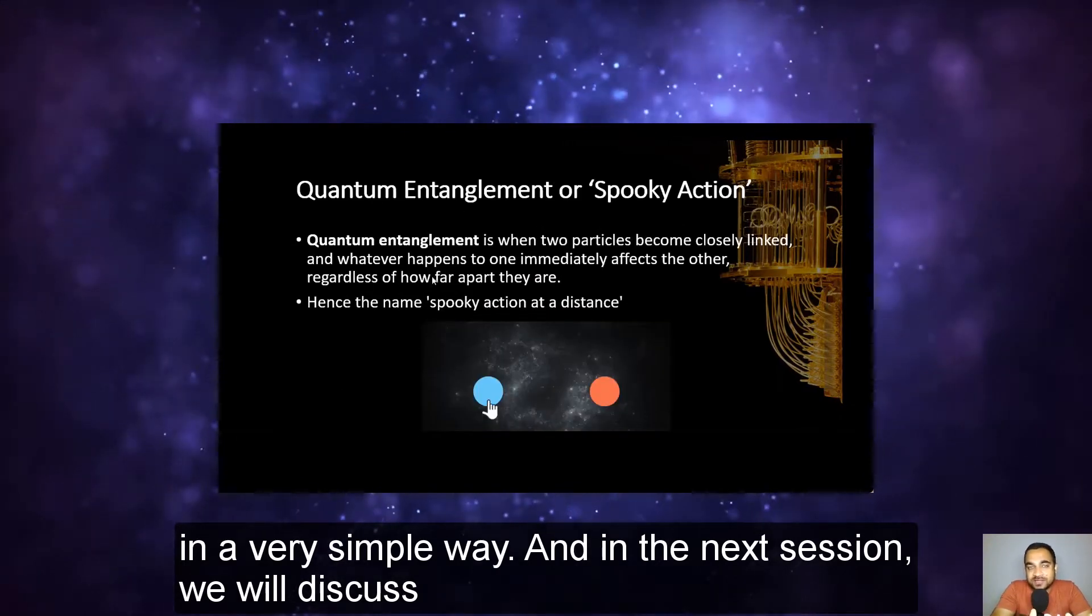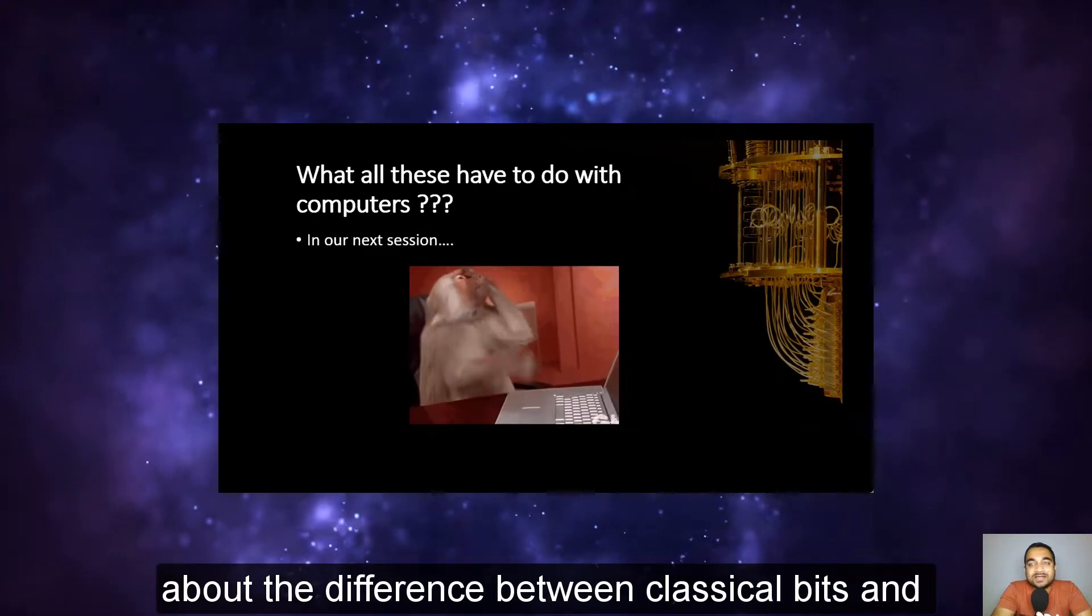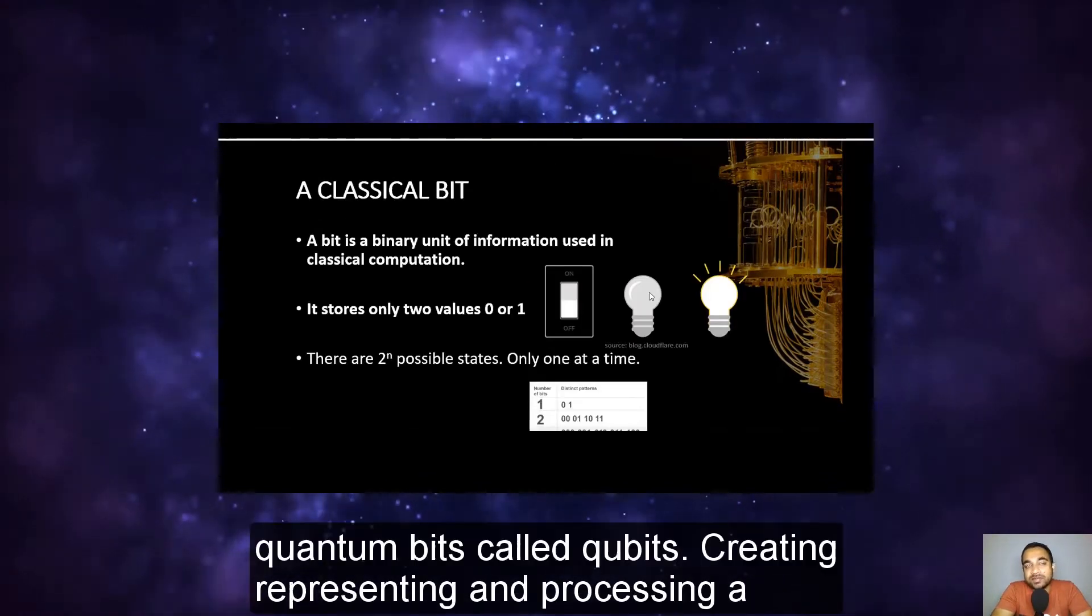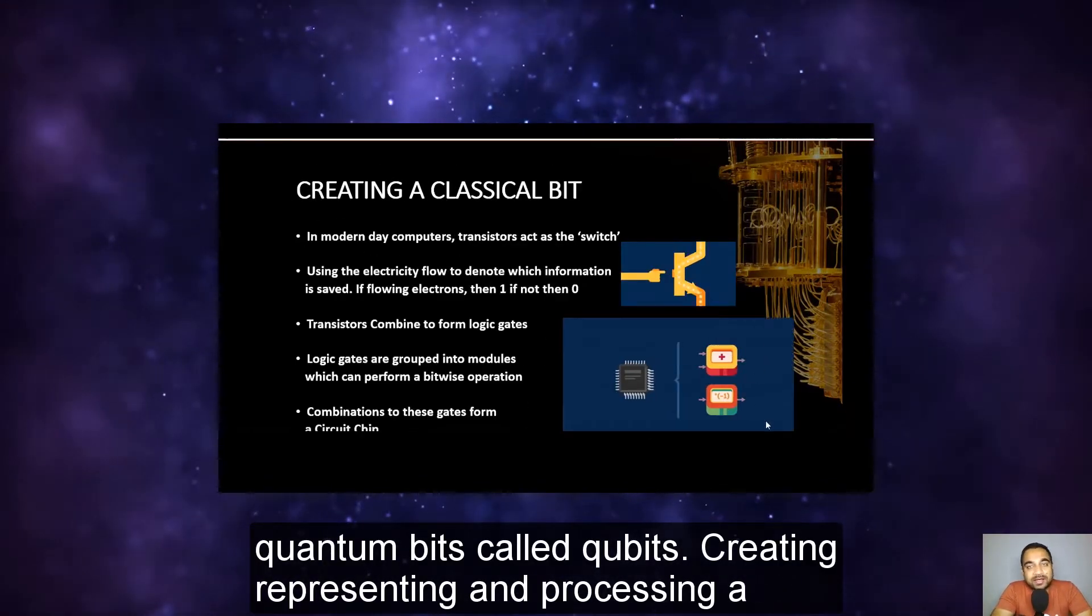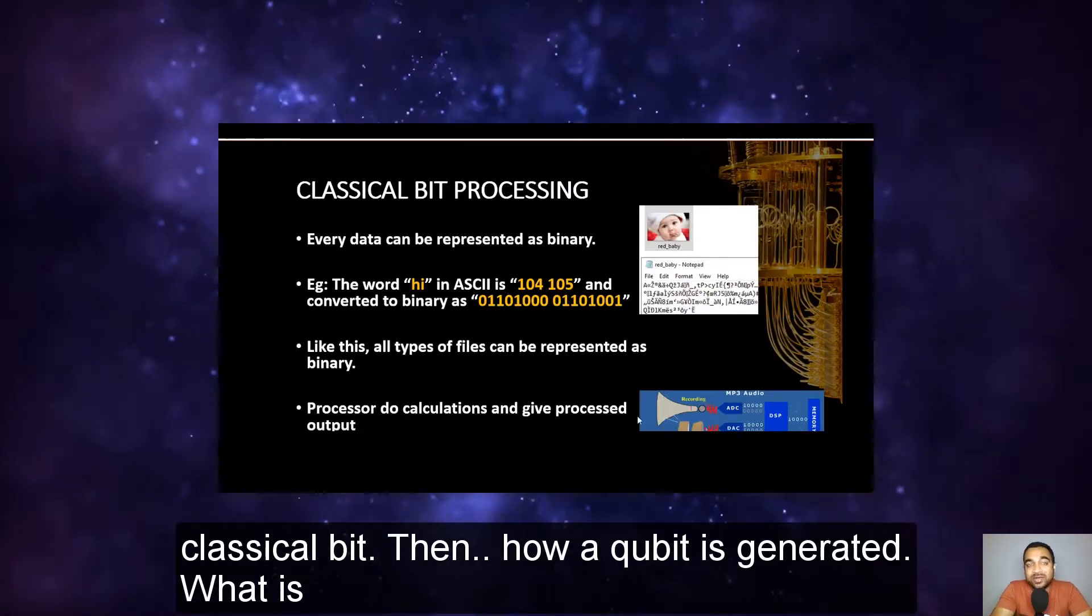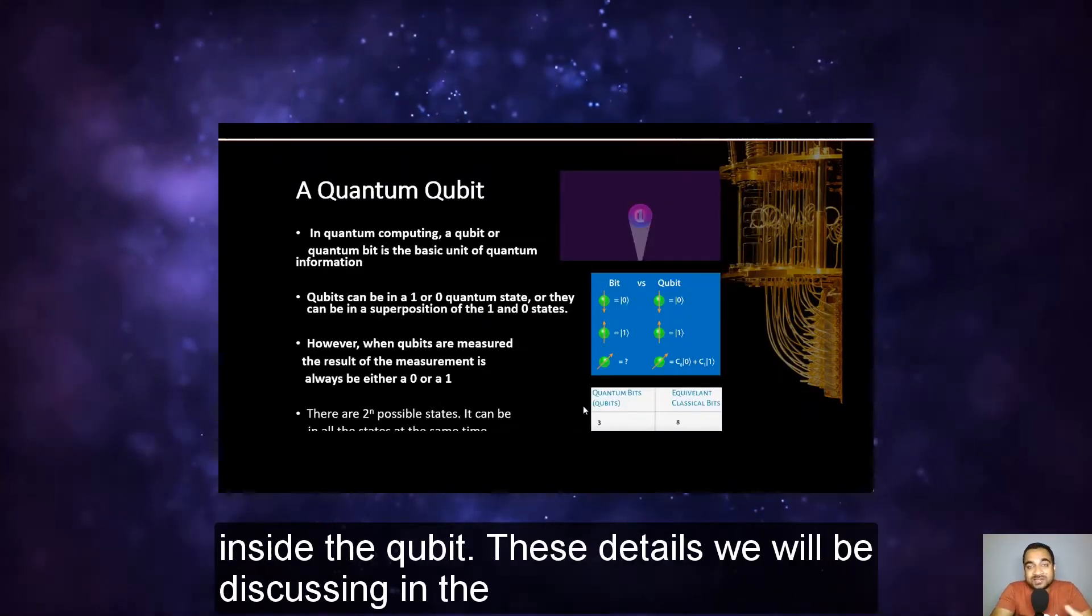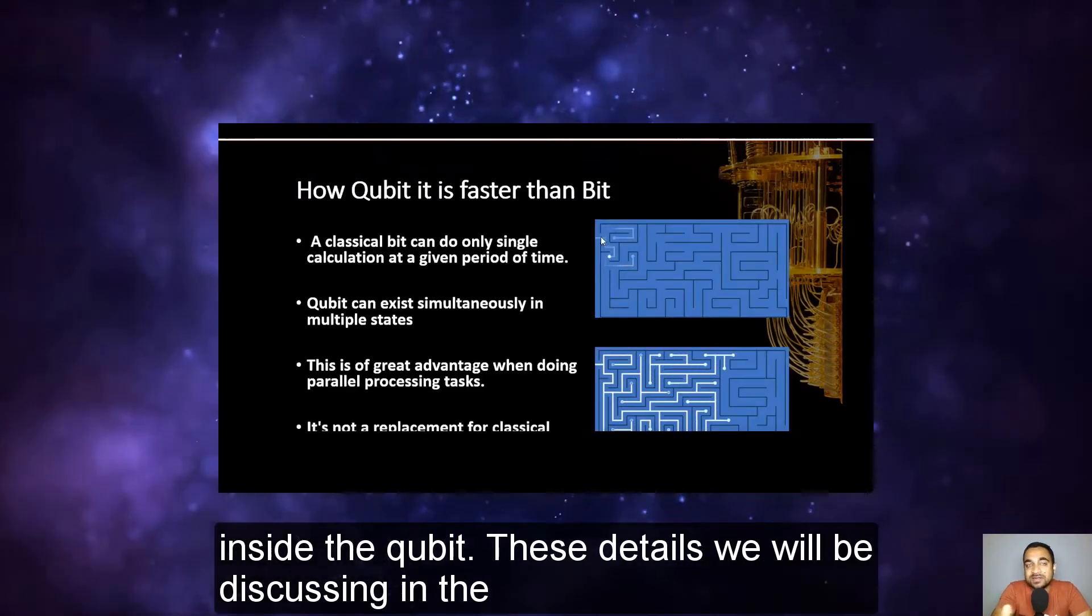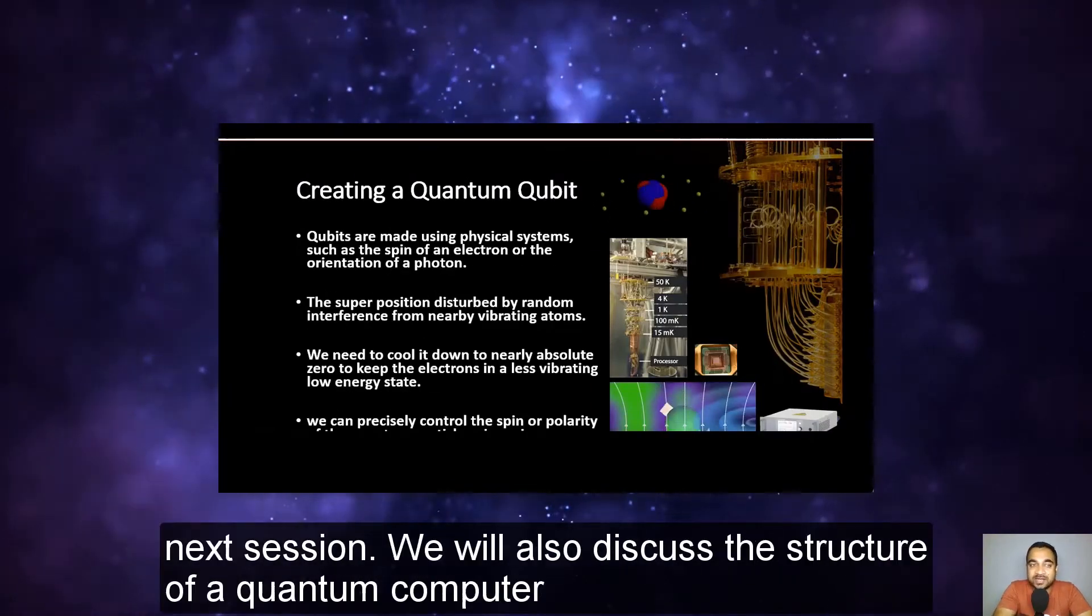And in the next session, we will discuss the difference between classical bits and quantum bits called qubits, creating, representing and processing a classical bit, then how a qubit is generated, what's inside the qubit. These details we will be discussing in the next session.